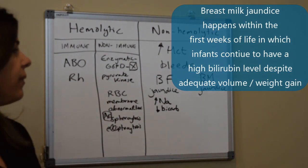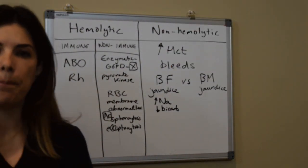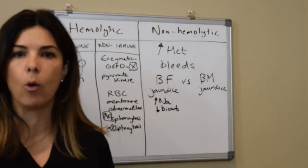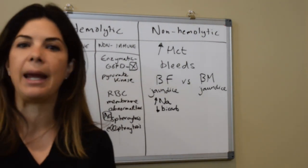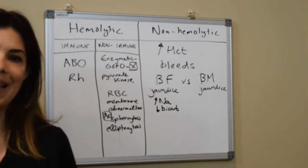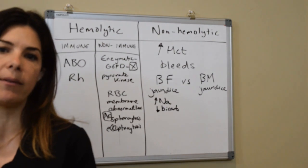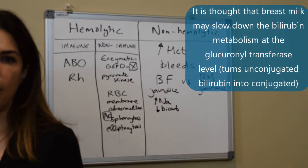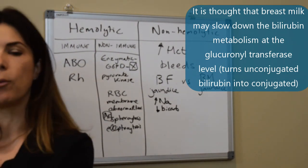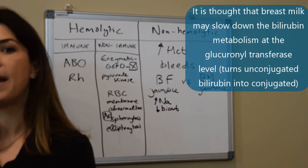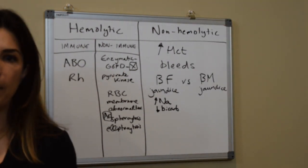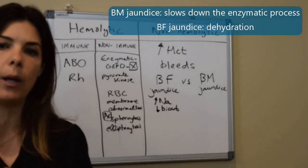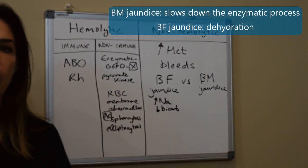Breast milk jaundice happens at a couple of weeks of life. The bilirubin stays at a very high level in breastfed babies — it's not a dehydration issue; they're gaining weight and not having issues with urination or stool, but jaundice levels stay in the high teens or higher. Nobody is exactly certain how breast milk slows down bilirubin metabolism, but it's thought that a substance in breast milk works directly on the glucuronyl transferase enzyme — the enzyme that conjugates indirect to direct bilirubin in the liver — causing a buildup of indirect bilirubin.